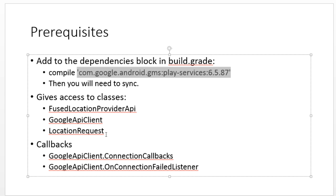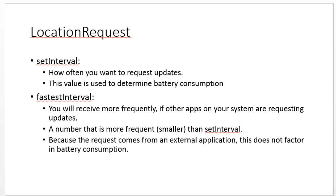Additionally, we're going to have some callbacks that we're going to need to implement. A callback means I'm a class that implements an interface. That interface has methods. I'm going to take this class and these methods and provide them to a service. And when that service has some action it wants to take, it's going to call those methods back on me. Basically, we're defining some methods that will be called when a specific action occurs.